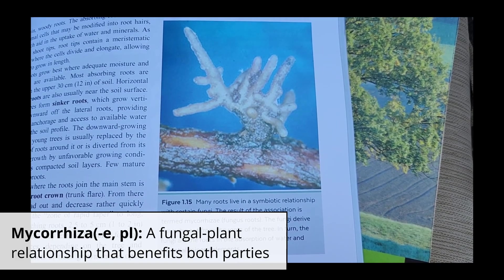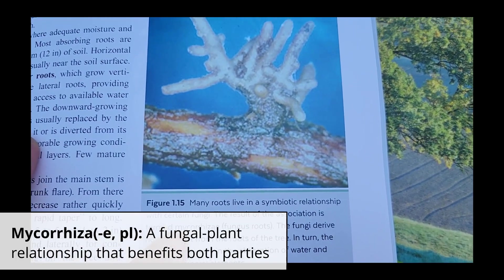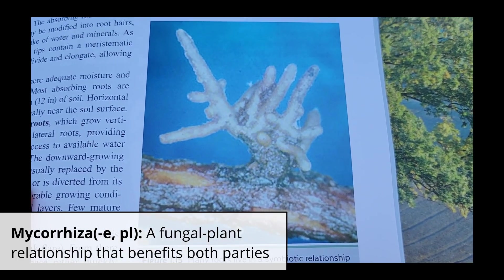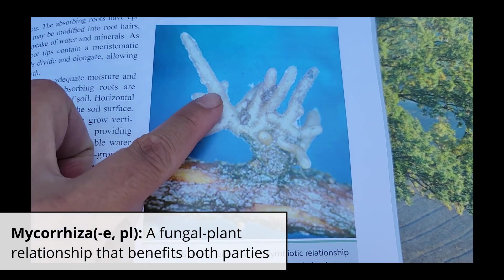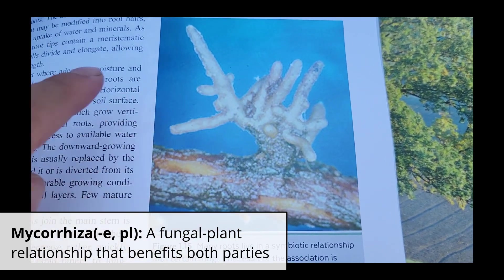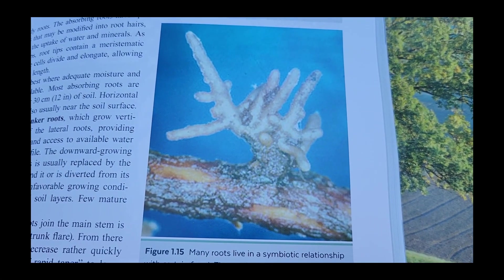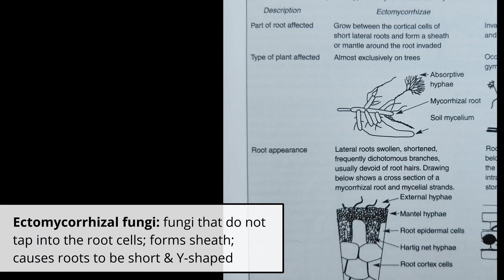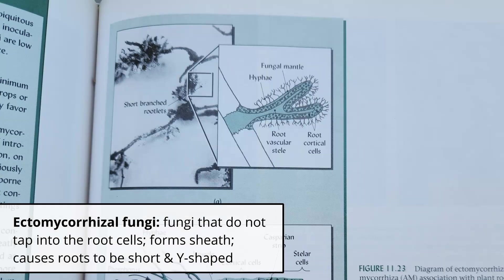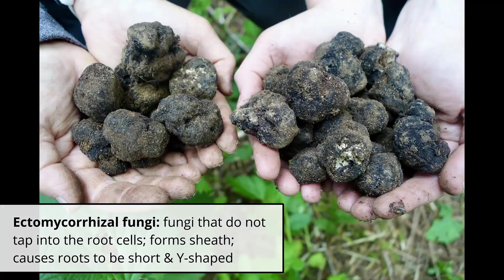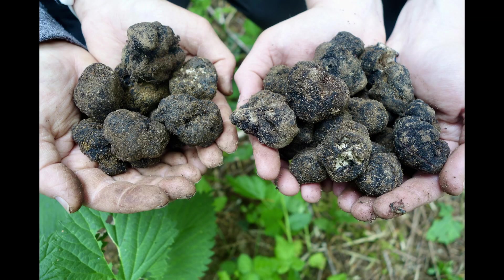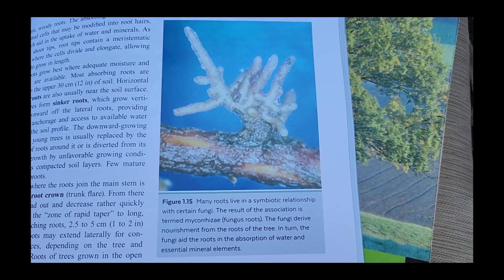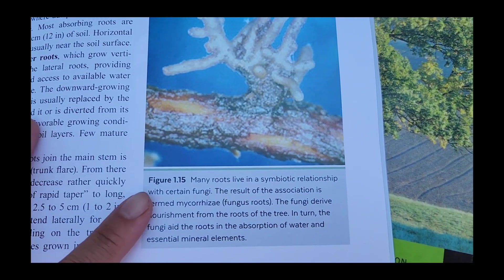Mycorrhiza, or mycorrhizae in the plural, specifically refers to the relationship that forms between a specific type of fungus and a plant. Those fungi are considered mycorrhizal fungi and there are a couple of groups. The first type is ectomycorrhizae, meaning on the exterior. These fungi tap into the root but don't enter the individual cells. Famous examples include truffles and morels, and these species will be visible on the plant root.